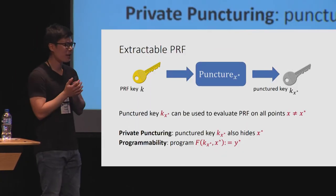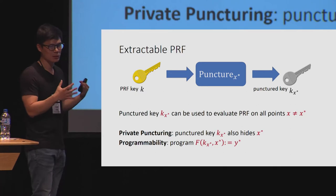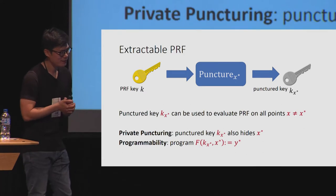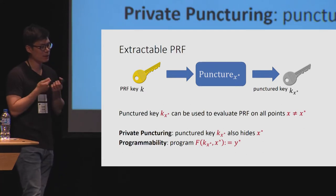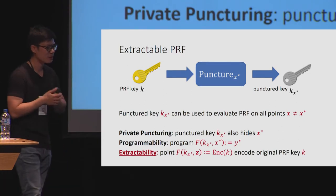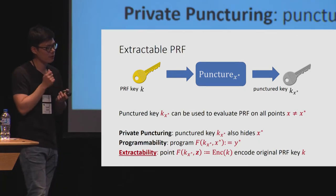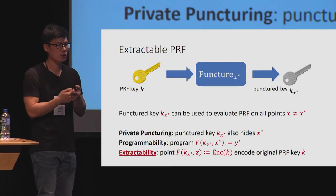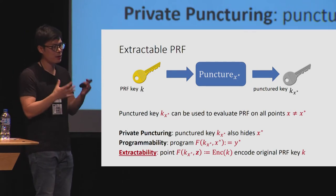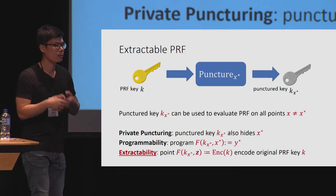This is where our new notion of extractable PRF comes in. Technically, extractable PRF is an independent notion separate from puncturable PRFs, but for this talk let me explain it as an additional property we can add to a puncturable PRF. We say that a puncturable PRF is extractable if there exists a special point Z for which evaluating the PRF on Z gives you an encoding of the original PRF key K. If you know the special point Z and are given a PRF circuit, you can evaluate the PRF on Z and get information about the original PRF key K.